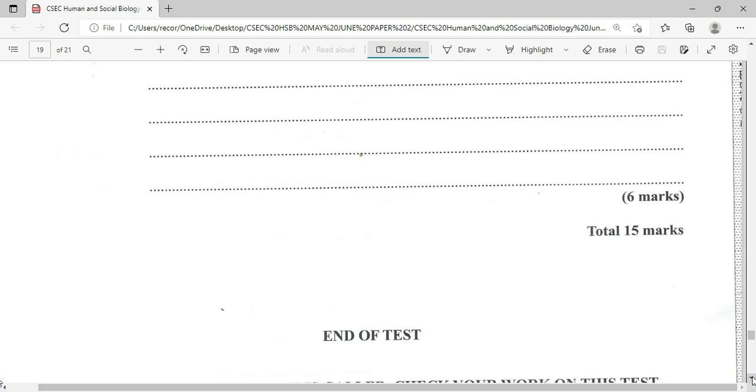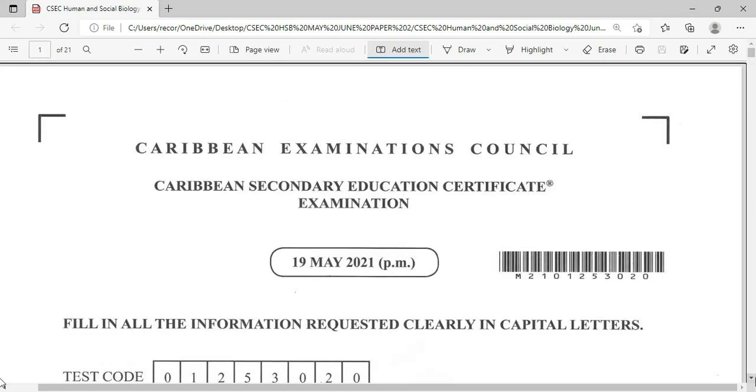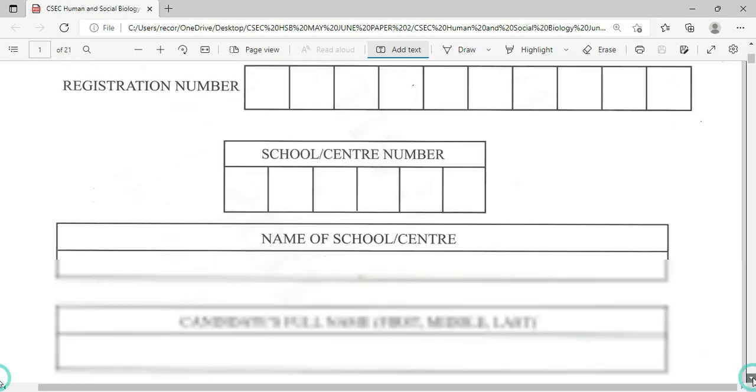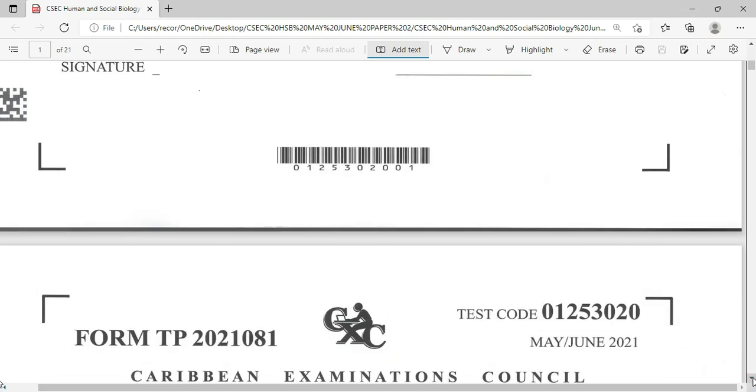This brings us to the end of this 2021 human and social biology paper. For those persons who are going to be sitting exam for January or, of course, May, June, July, the next exam sitting, please be reminded you can reach me at 1-876-219-5191 for classes, for labs, for assistance. Of course, it's on our paid platform. I do hope that you will follow in our series. And of course, you'll be facing your exam. Again, this is the 2021 human and social biology paper.